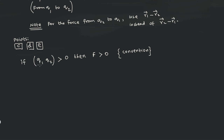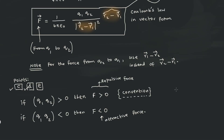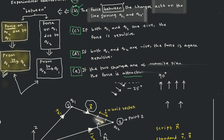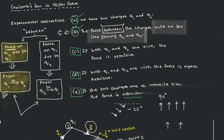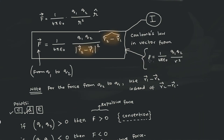A repulsive force is defined as F greater than zero, which covers point C. If you take one positive and one negative charge the force is attractive, meaning F less than zero. So it turns out that everything from point A through the last experimental observation is now captured in the equation — that transition from words to equation has a lot of implication and consequence.